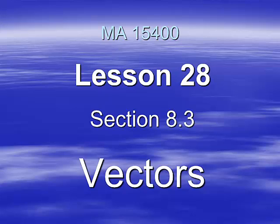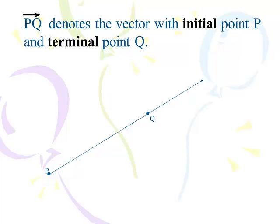Here we are at lesson 28, and we're busting into a new section, section 8.3. We will have a number of lessons in section 8.3 before we're done. So in this section, we're going to be talking about vectors. When we say vector PQ, we put an arrow above it. The initial point is P, and the terminal point is Q.